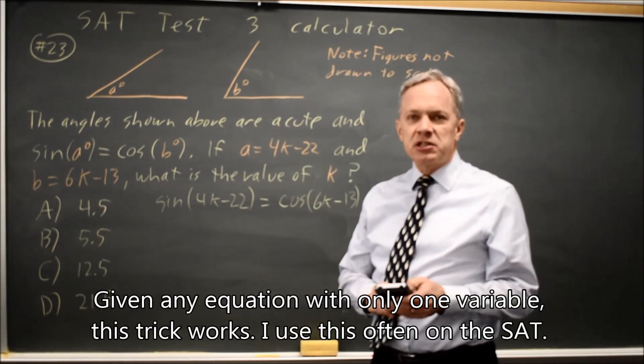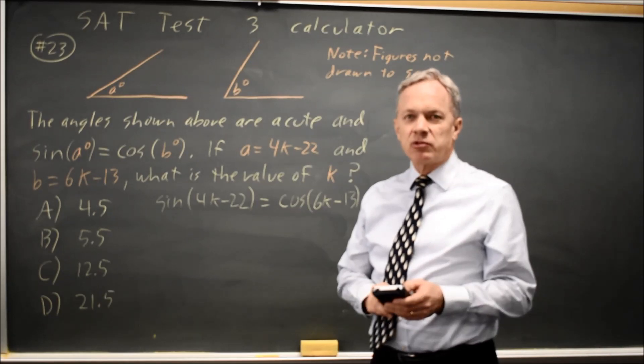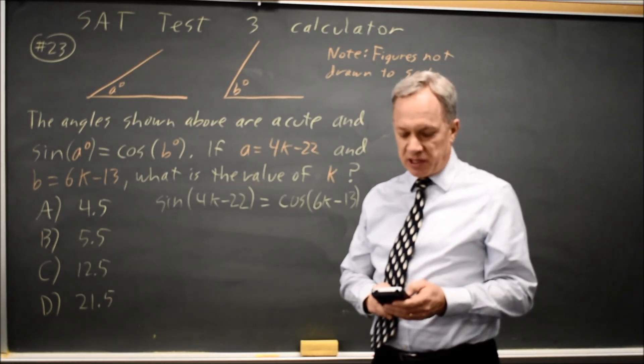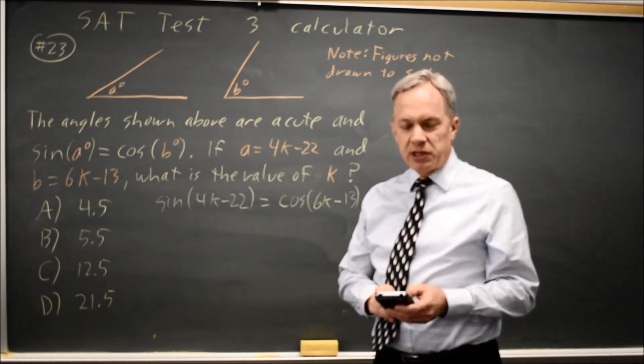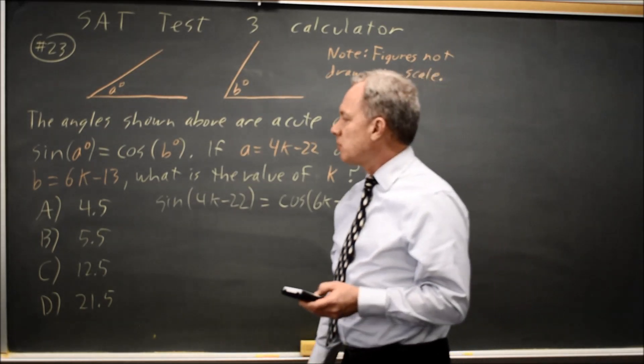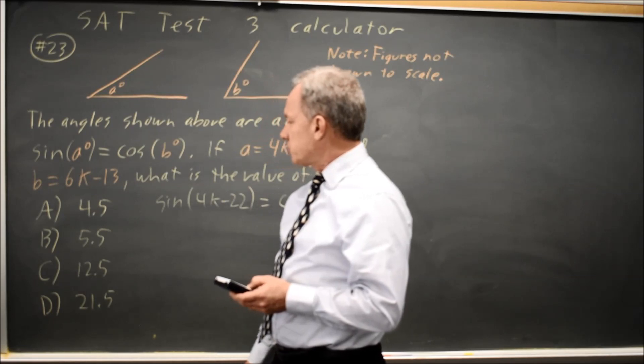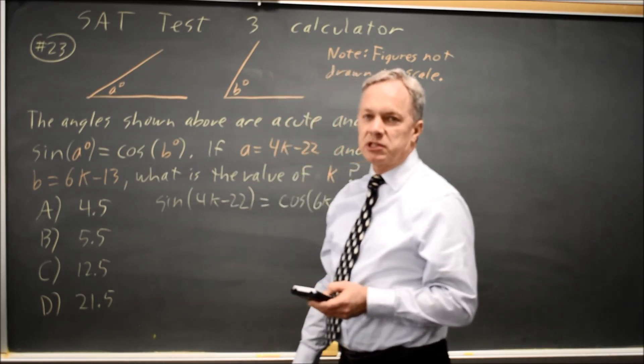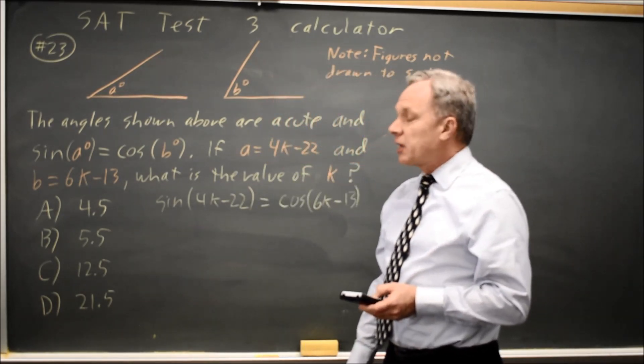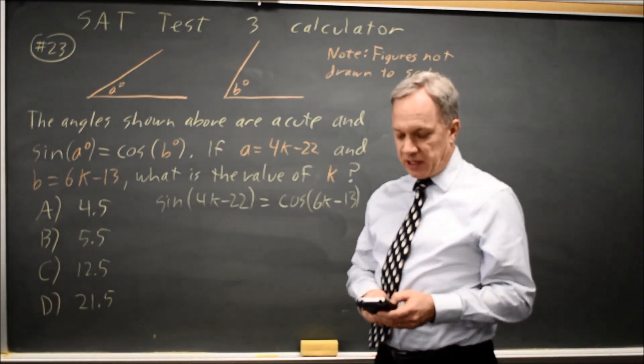If I enter the left side into y1 on my graphing calculator and the right side into y2 on my graphing calculator and I choose a window where the x window includes all possible values for my variable, so I choose 0 to 30 because all four answer choices for k are between 0 and 30.